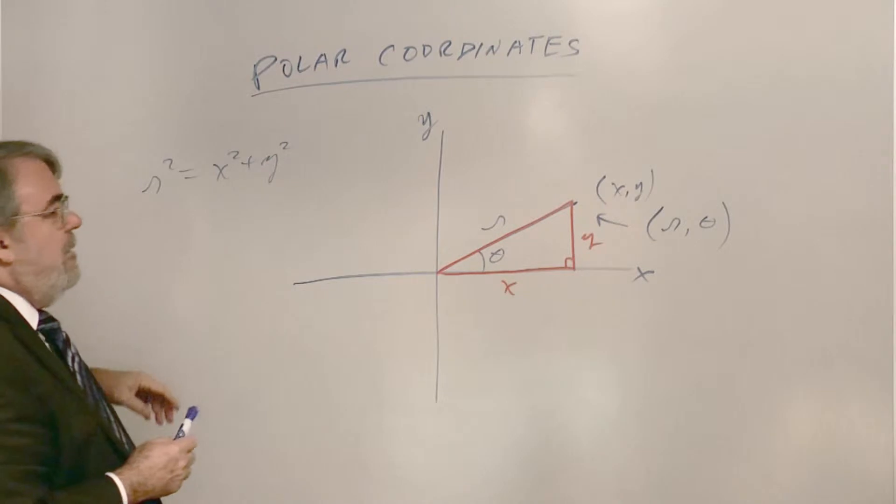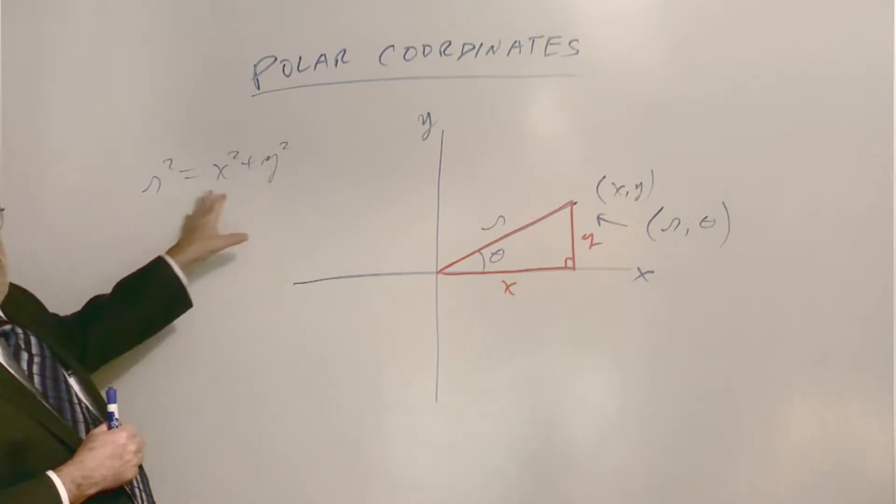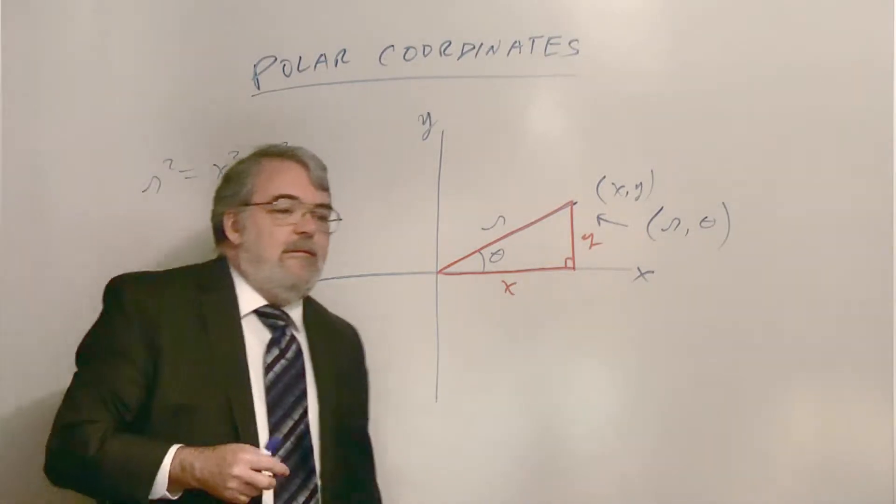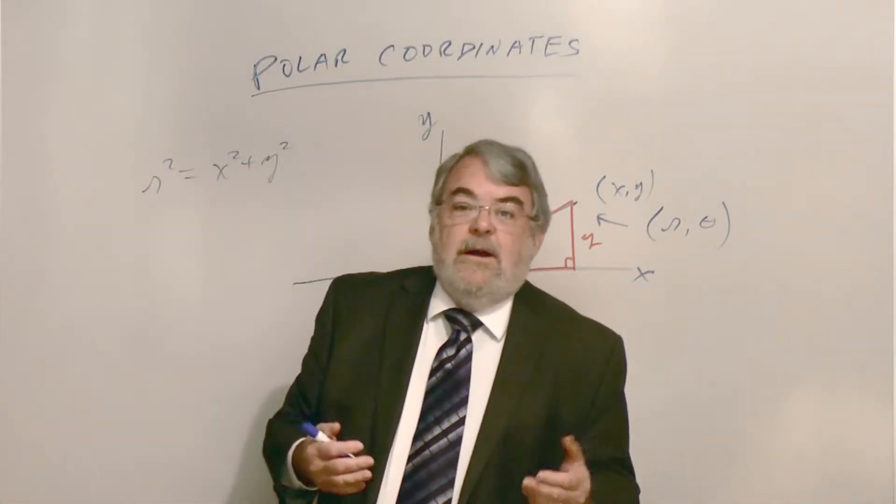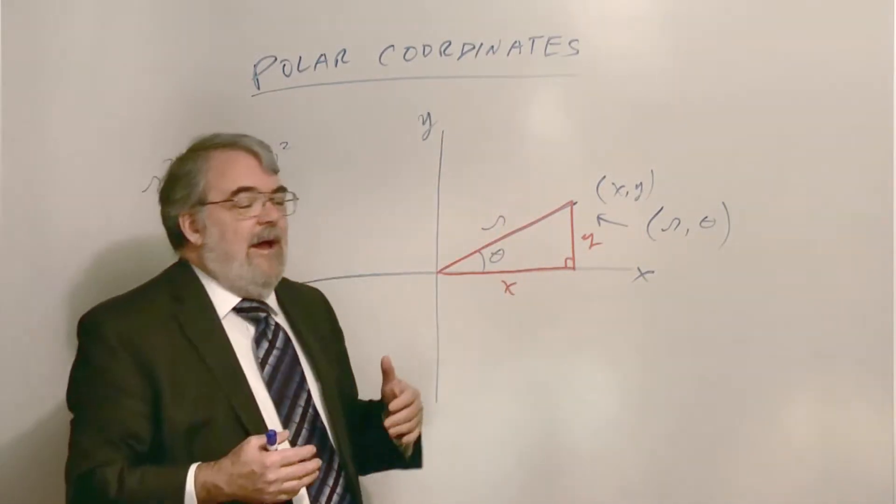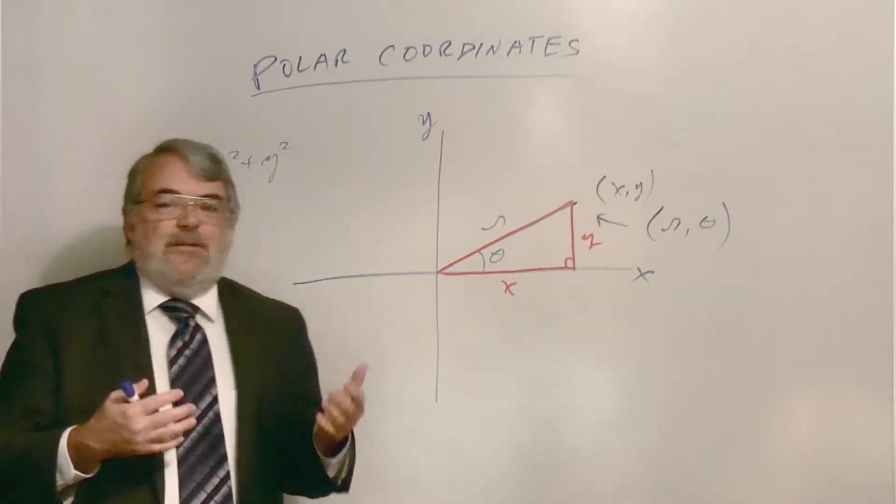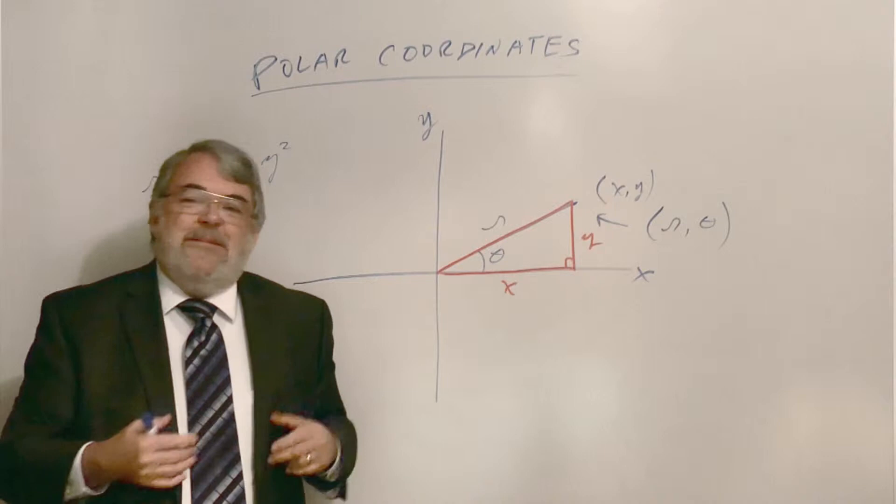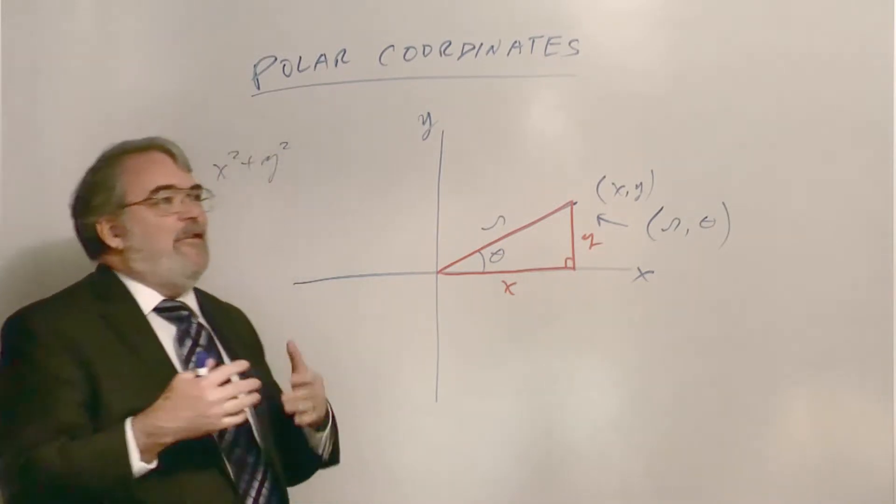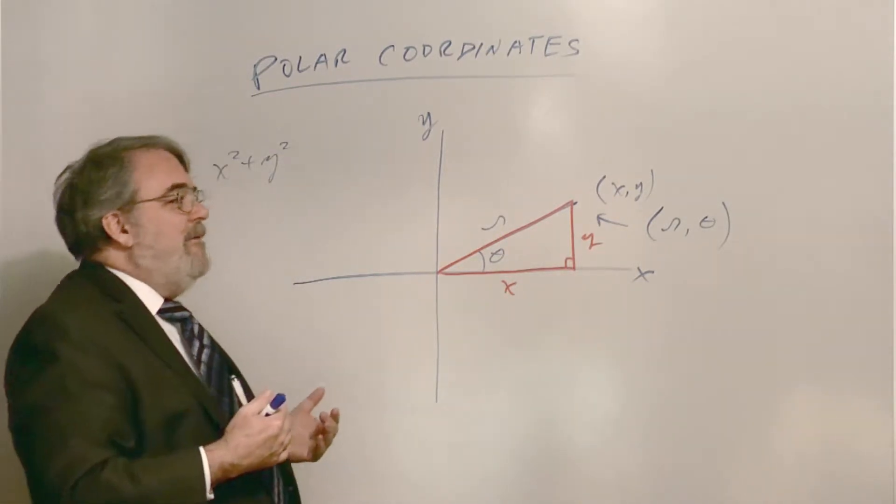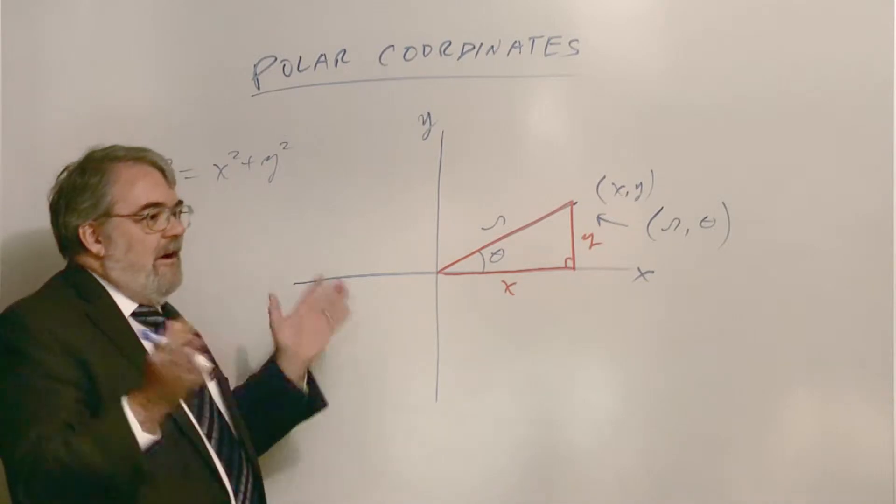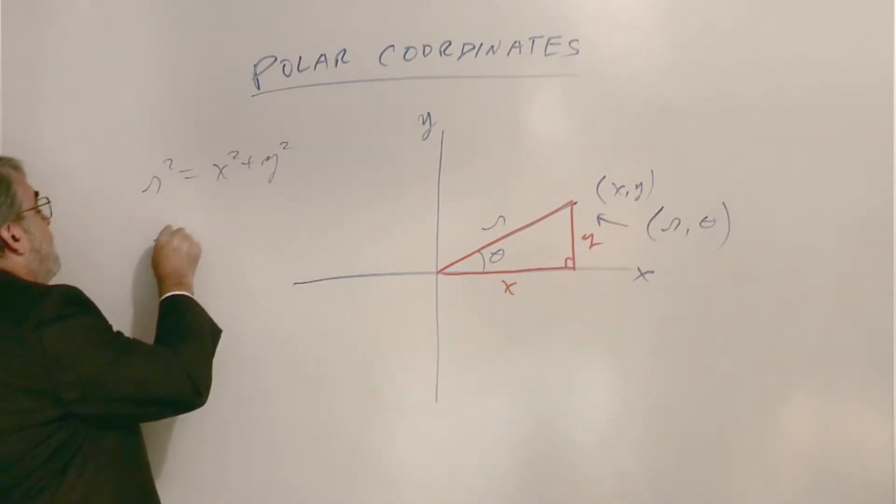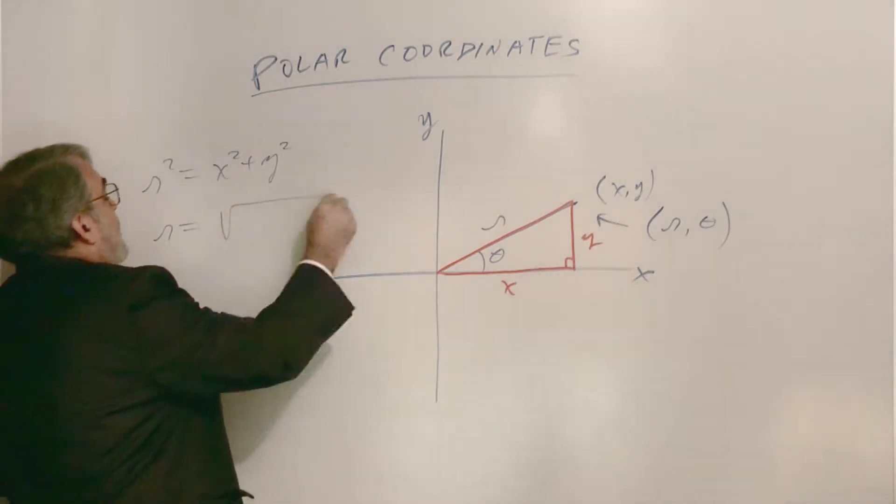All right, so R squared is X squared plus Y squared, and normally we'll take the square root. Now in algebra when you take the square root of an equation you create two different answers, but we're going to view r as a positive distance. I mean, actually it's a bit of an oxymoron because in mathematics distances cannot be negative. And so it is possible to interpret r as a negative number, but I'll show you that later. Anyway, you could say that r is going to be the positive square root of X squared plus Y squared.